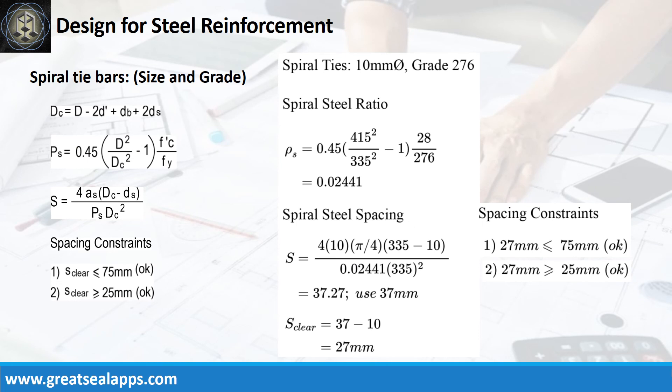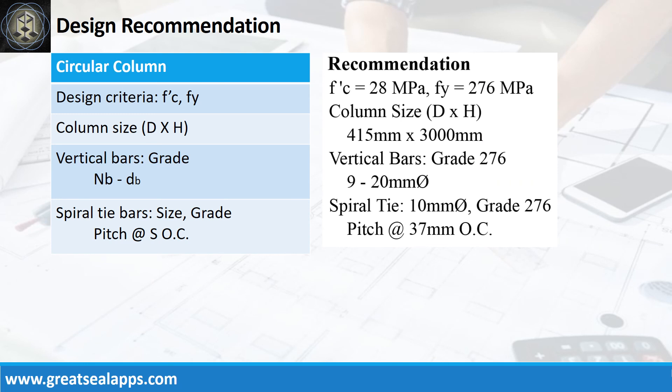The spiral steel ratio ρs equals 0.02441 for a spiral pitch of 37 mm. Design recommendation: fc′ equals 28 MPa, fy equals 276 MPa, column size is 415 mm diameter by 3000 mm, vertical bars of grade 276 — 9 pieces of 20 mm bar, spiral tie 10 mm bar of grade 276 at a pitch of 37 mm on center.